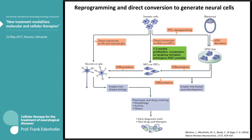Direct conversion to induced neural stem cells — INSCs — is highly preferred because it is relatively short at one to two months, these cells are non-tumorigenic, there is no teratoma formation, and autologous INSCs are possible — which is not achievable with blastocyst cells and would be too costly and lengthy with iPS reprogramming for clinical application.